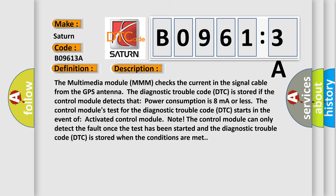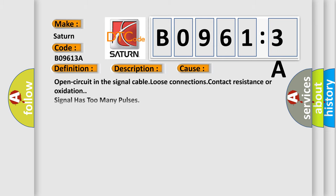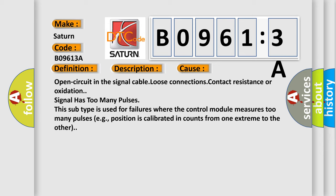This diagnostic error occurs most often in these cases: Open circuit in the signal cable, loose connections, contact resistance or oxidation, signal has too many pulses. This subtype is used for failures where the control module measures too many pulses, for example, position is calibrated in counts from one extreme to the other.